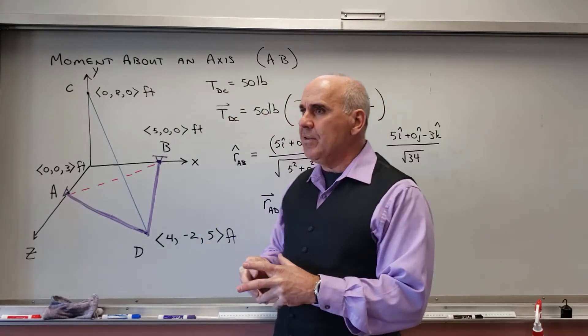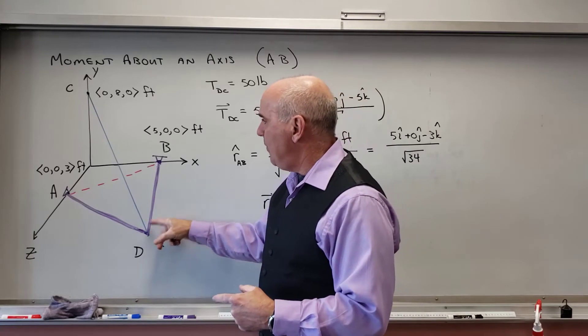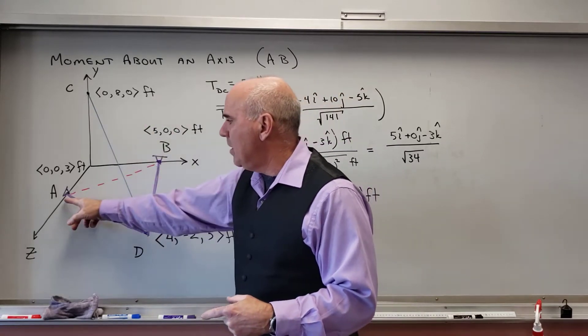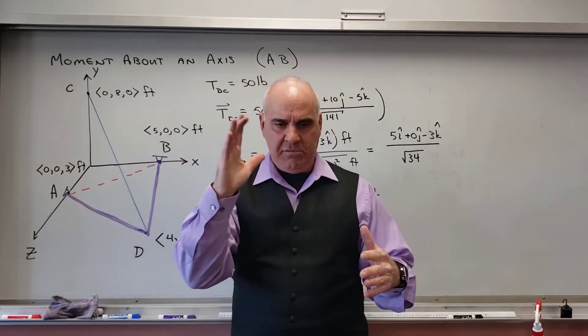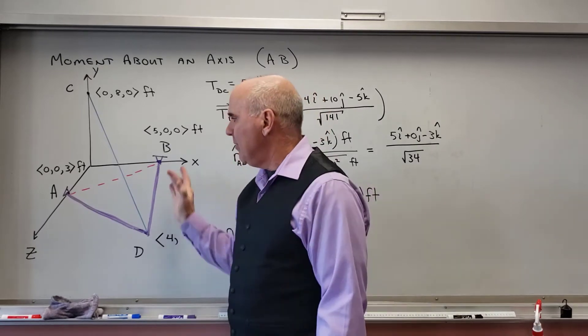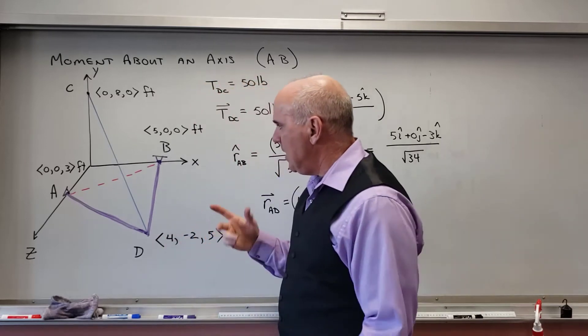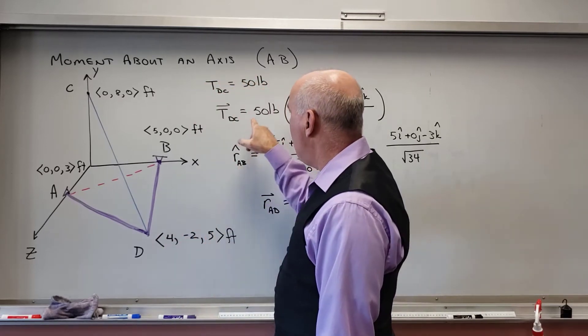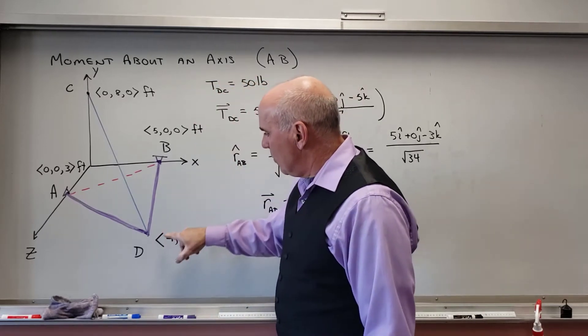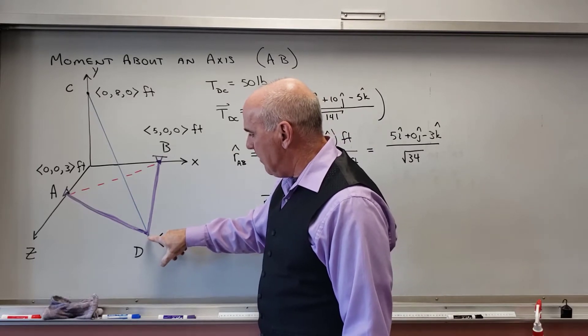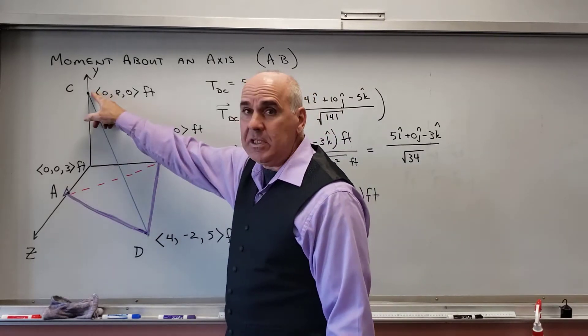And what I want then is the moment that this 50-pound force is exerting about A-B to lift up or keep this thing from falling down. We're not going to worry about the weight of the frame structure. So now to do this, I need a couple of things. First off, I want the vector tension. So remember, in order to find the vector tension, I have to find the unit vector from D to C.